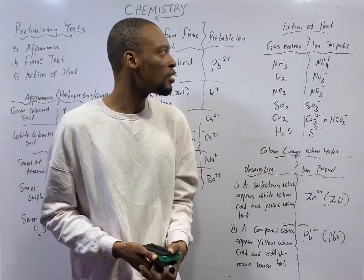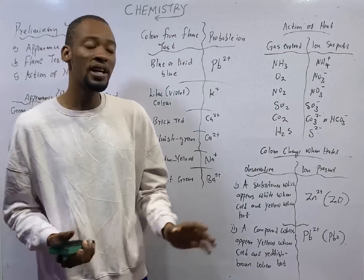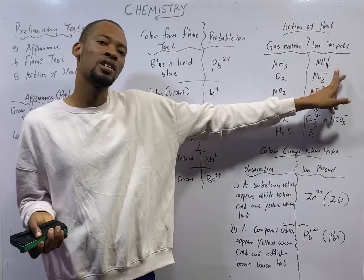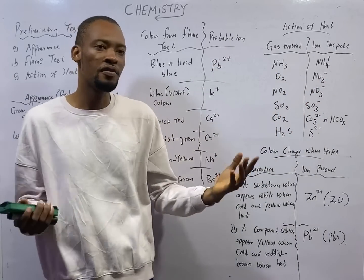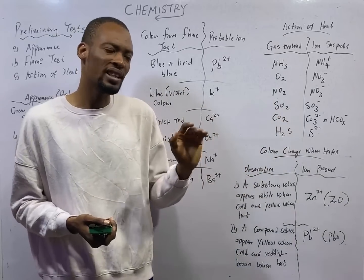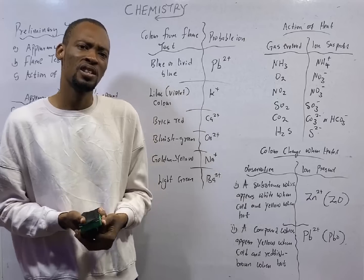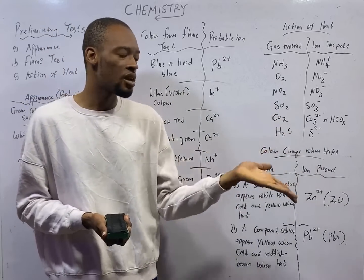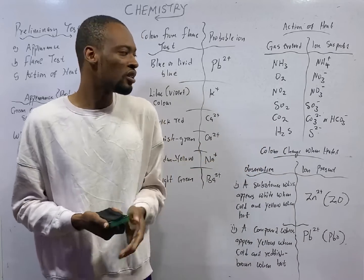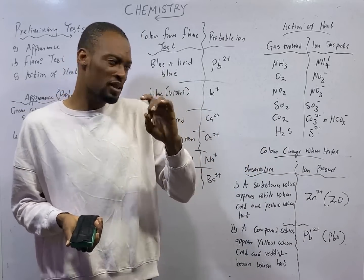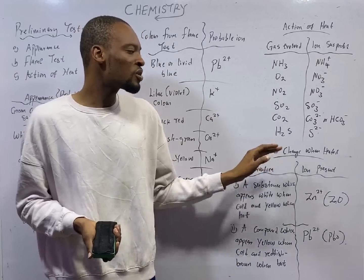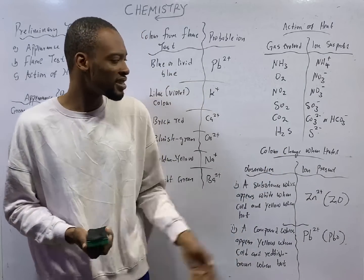Now let's see the action of heat. When a substance is heated and you are told that ammonium gas was evolved, that means ammonium ion is present. If hydrogen gas is evolved when heated, know that NO3 ion is present. If NO2 is evolved when heated, know that NO3 is present. When CO2 gas is evolved, suspect CO3 2- or HCO3-. And when hydrogen sulfide gas is evolved, we are suspecting the presence of sulfide ions.